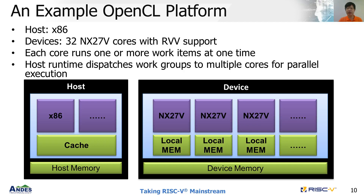This is our OpenCL platform. The host is x86 and the device has 32 AndesStar NX27V cores with RVV support. The device has global memory which can be accessed by the host, and each core has its own local memory. In this platform, each core runs one or more work-items at a time, and the host runtime dispatches all work-groups to multi-cores for parallel execution. When some cores are idle, the host will assign a new work-group to execute.